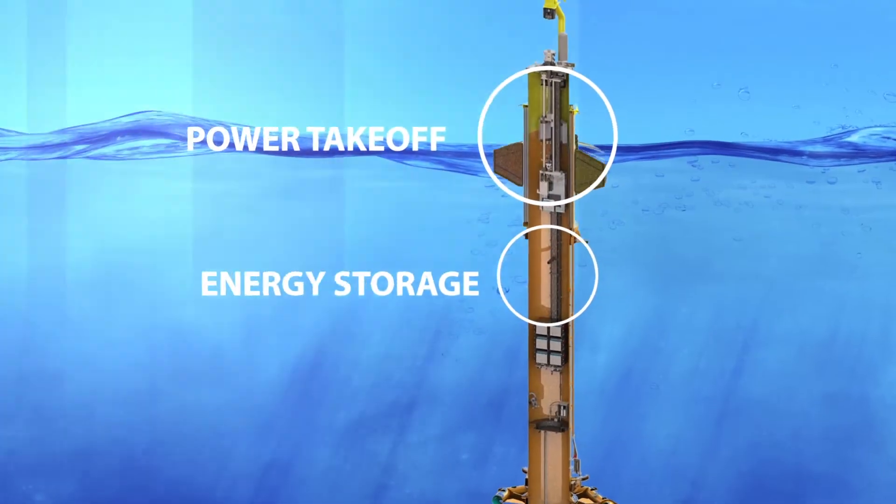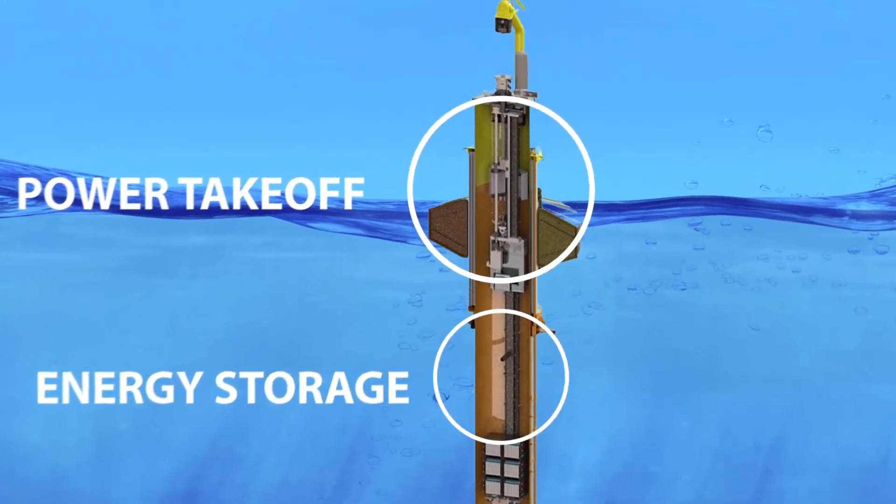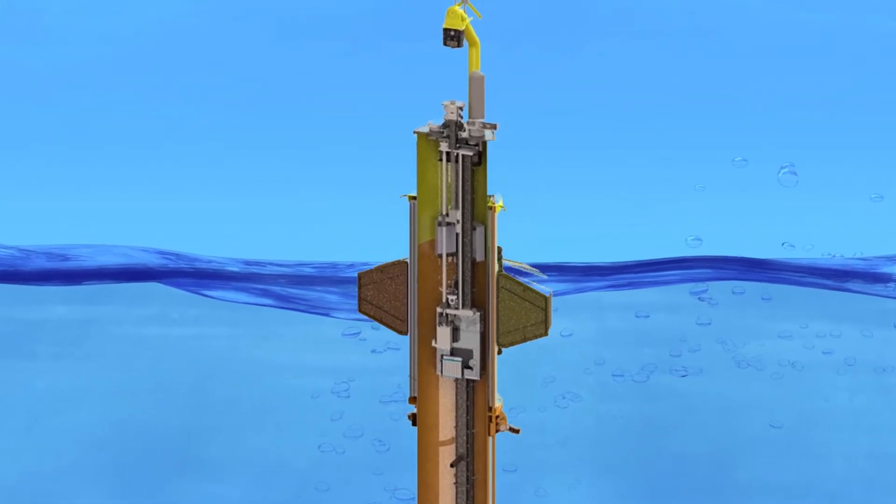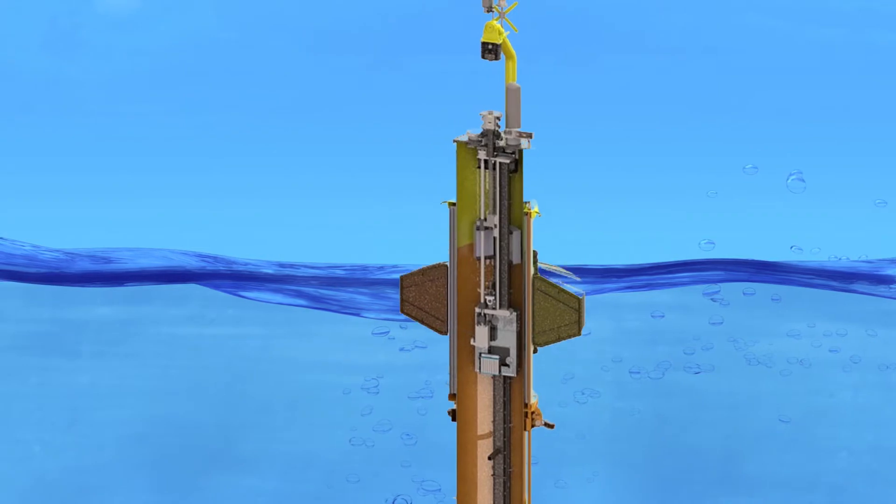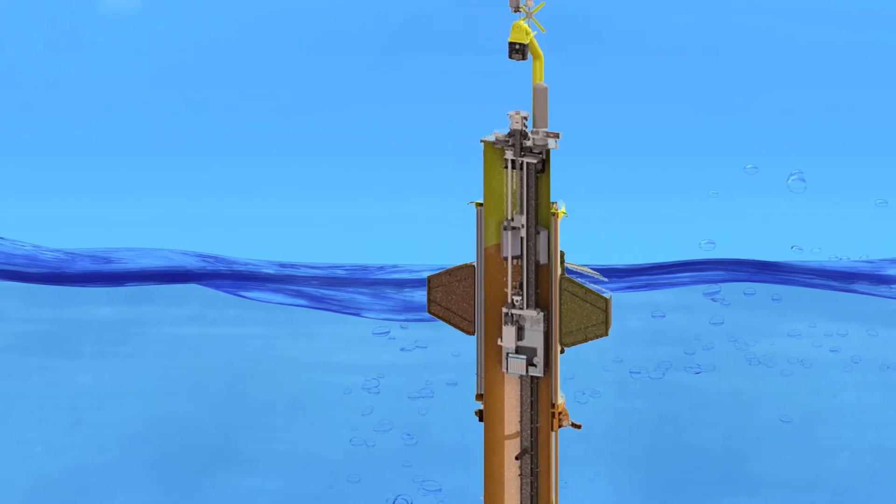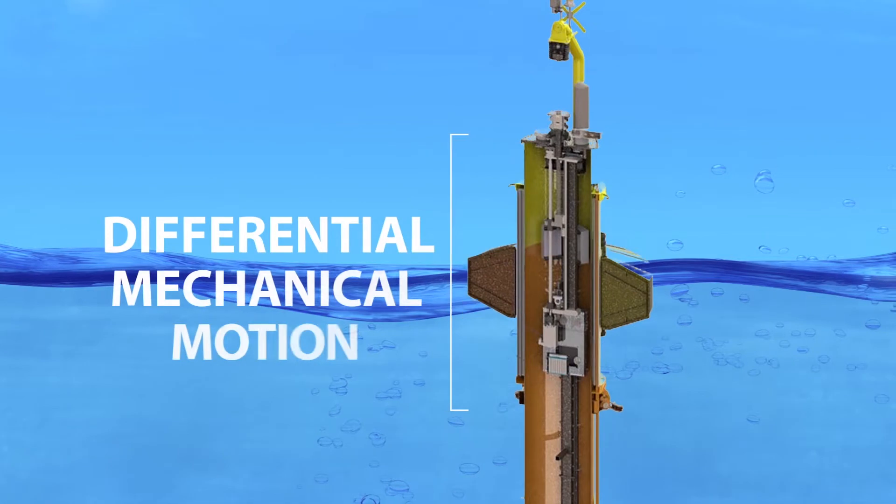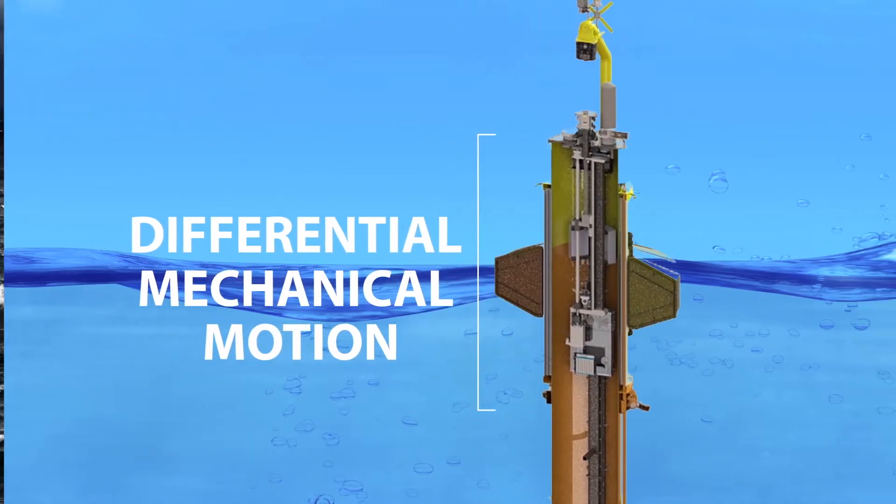The Power Takeoff and Energy Storage System are integrated within the Power Buoy, which consists of an upright spar and float section. The motion of the float in response to the waves relative to the generally stationary spar creates the differential mechanical motion that drives the PTO.